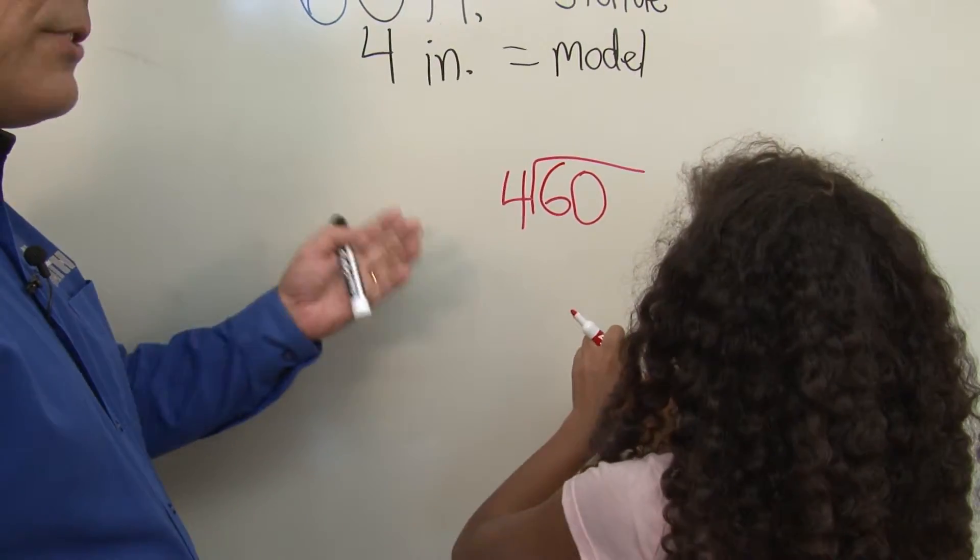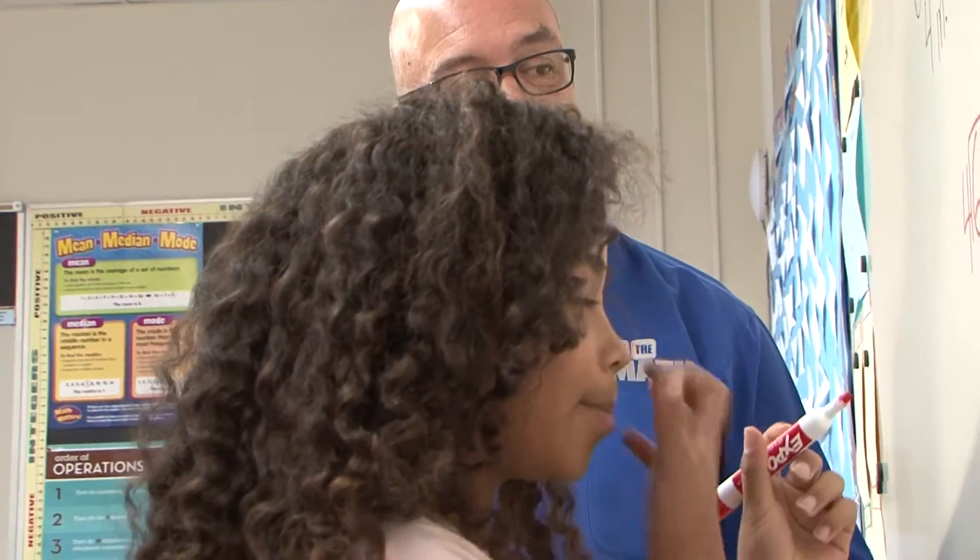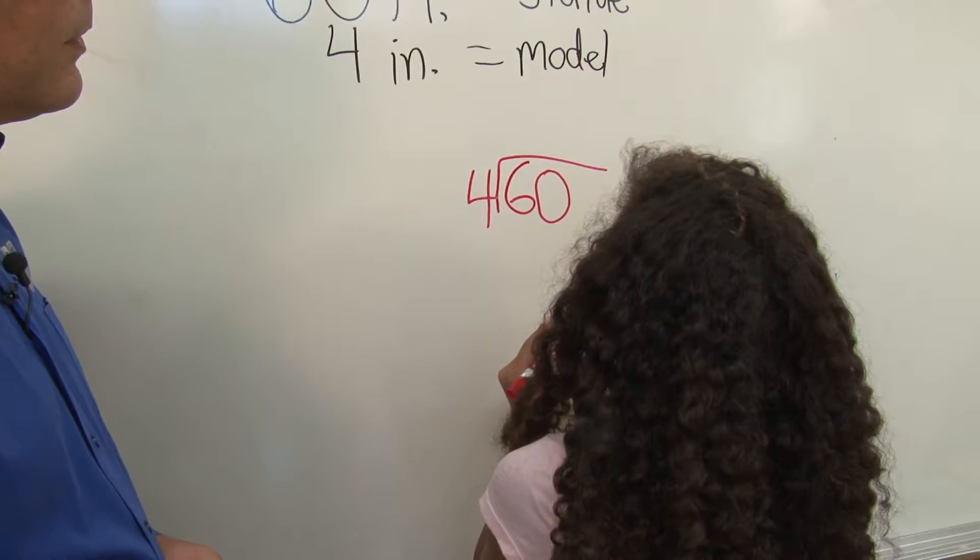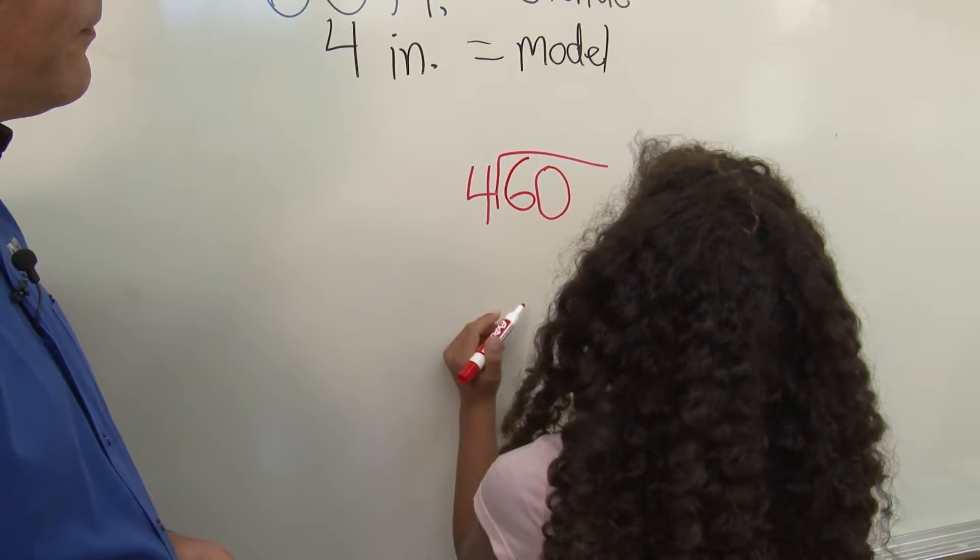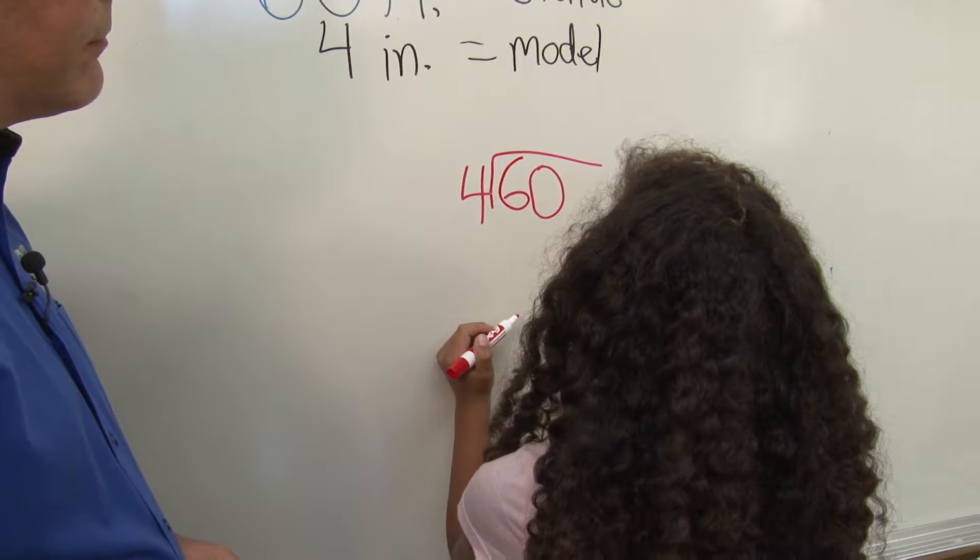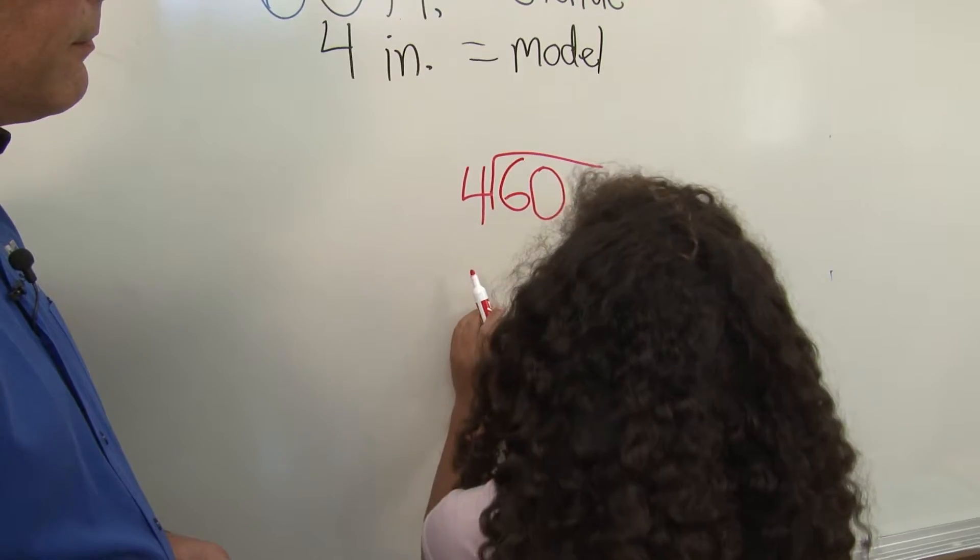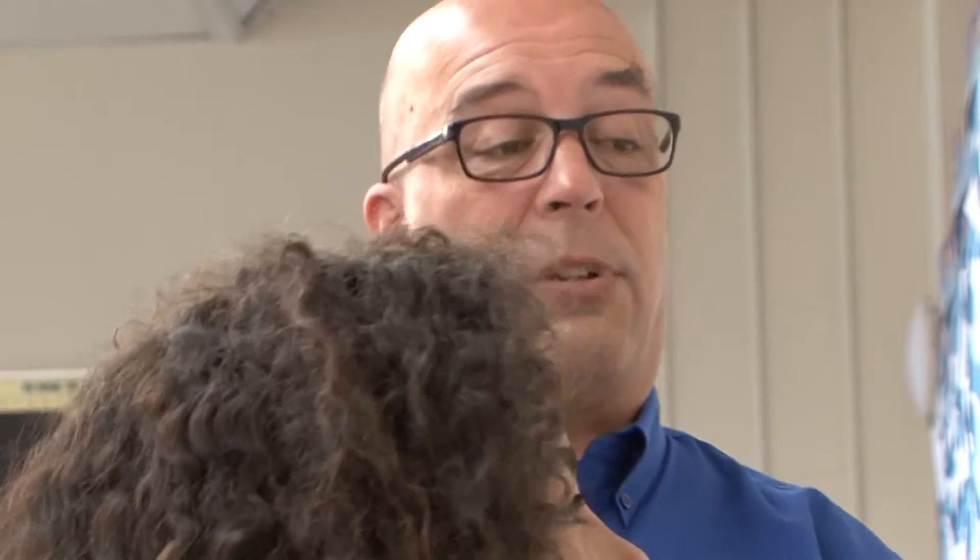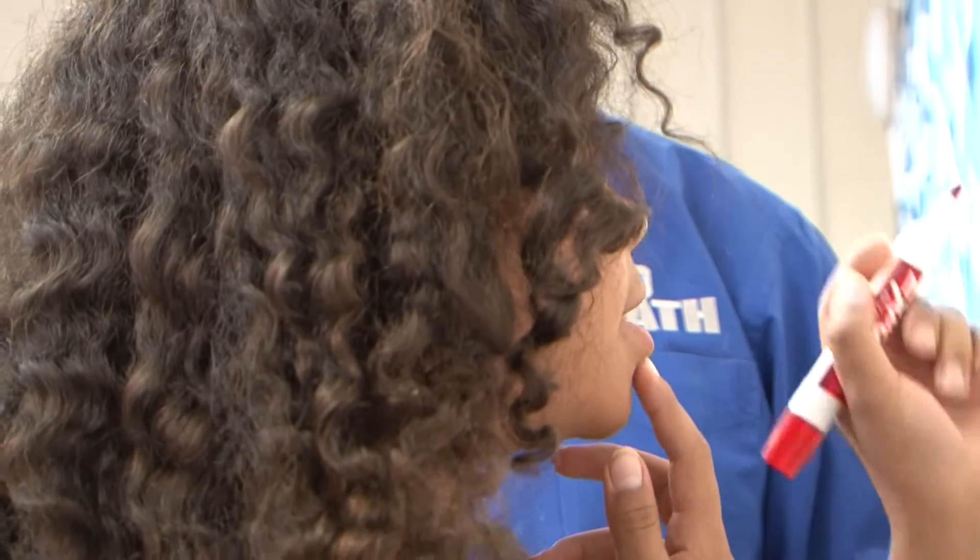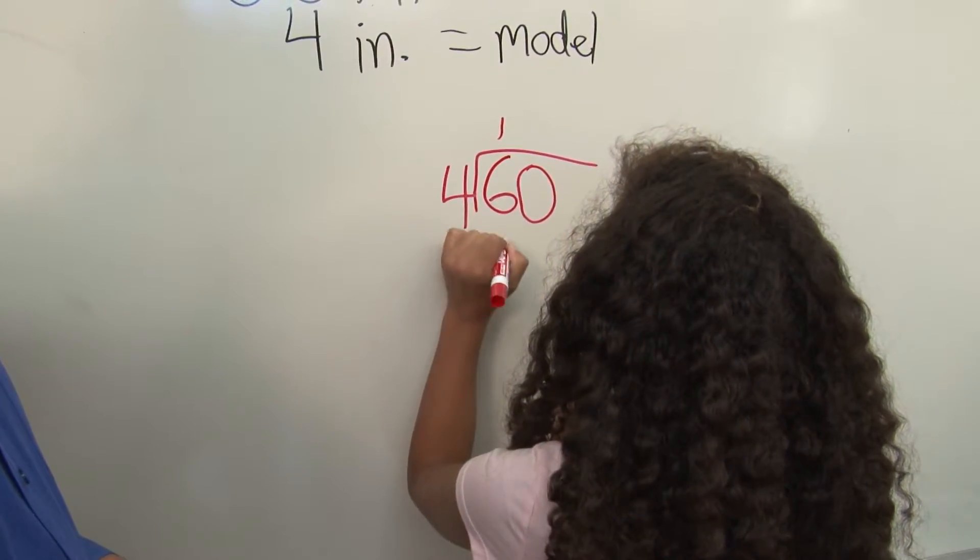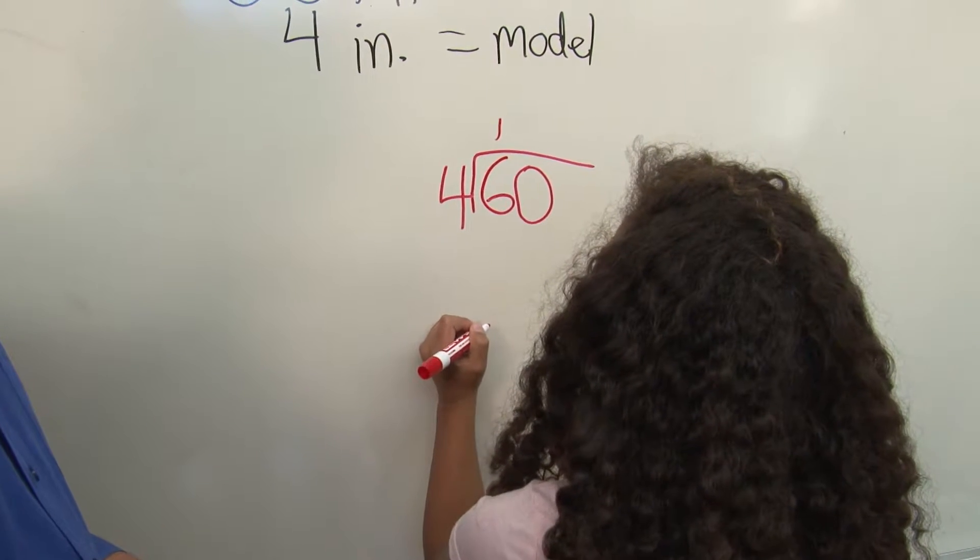All right, now explain to me what you're doing as you go ahead and go through the process. Okay. Well, 4 goes into 6. It'll only go in one time, right? Because 4 times 2 is 8 and that's too much, right? Okay. So it'll only go in there once. Okay? Which is 4, right? Right.